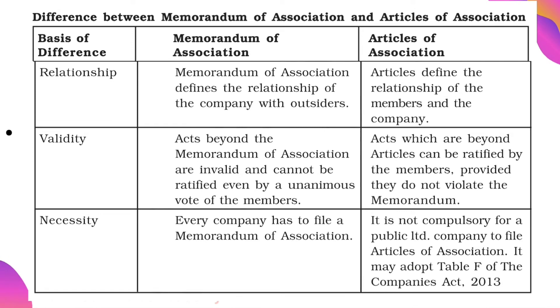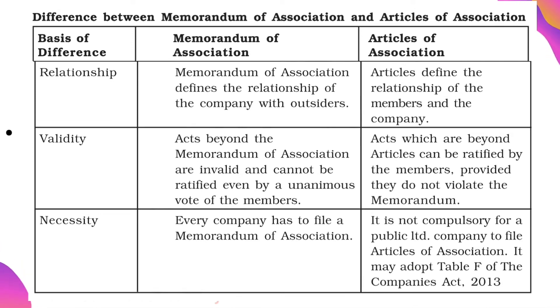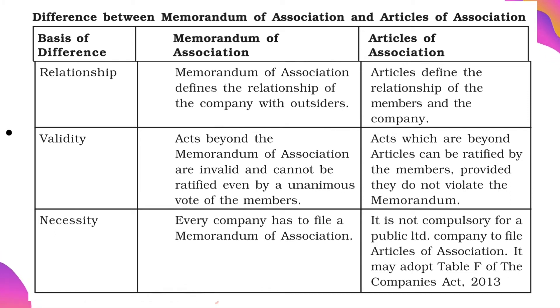From the relationship point of view, Memorandum of Association defines the relationship of the Company with outsiders. And Articles of Association defines the relationship between the members and the Company.